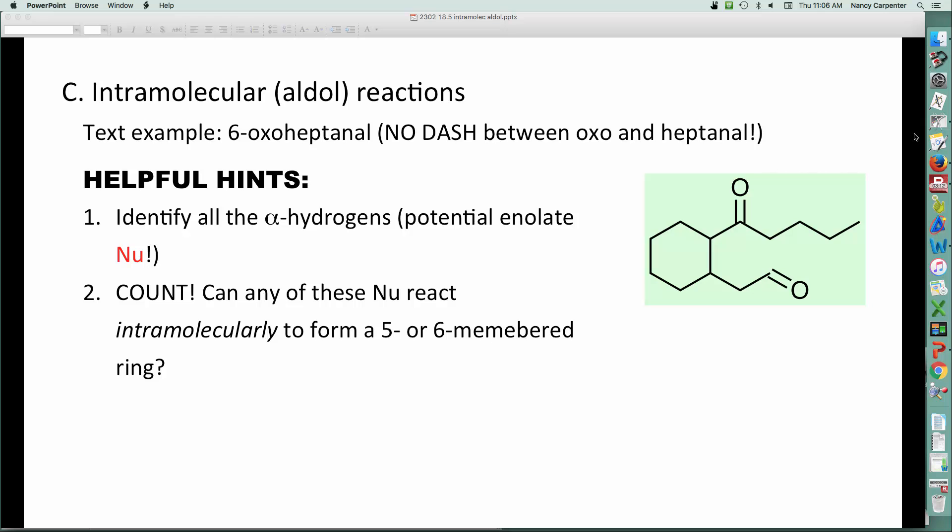Then, you basically just need to count. Given those potential nucleophiles, can any of those react to make a five or six-membered ring? So here's my nucleophile. If I react with that electrophile, will I get a five-membered ring? And it should be pretty evident that one, two, three, four. No, that is not a five-membered ring. That would give me a four-membered ring. So, you're basically just going to look at the nucleophile and see what all it could possibly react with.